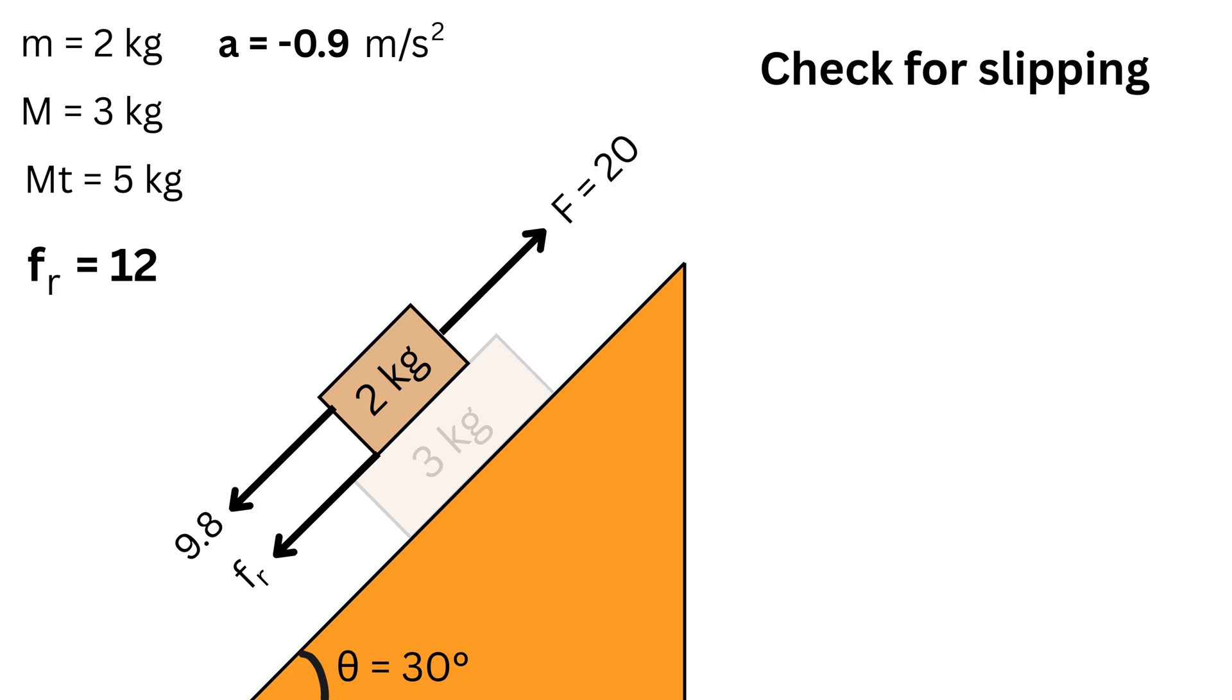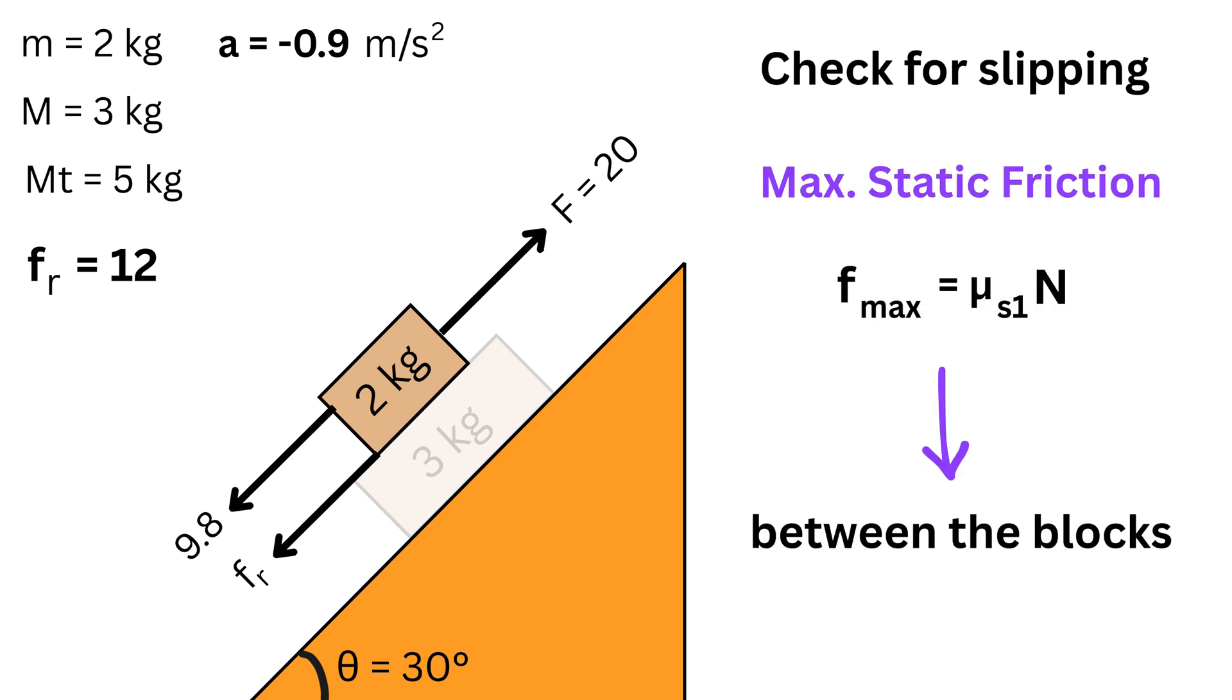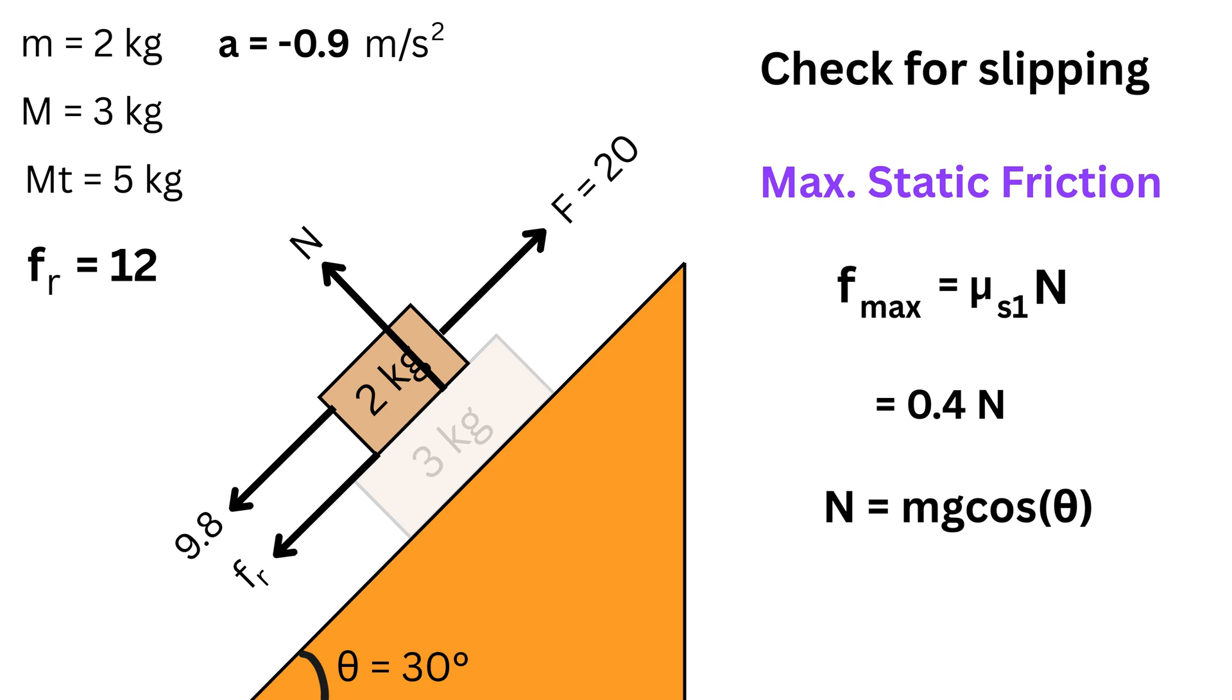Next, we will calculate the absolute maximum static friction f_max that can exist between the two blocks. This maximum force is the static friction coefficient mu_s1, or 0.4, multiplied by the normal force n between the blocks. Normal force, as mentioned, is given as mg cos(theta). Now here comes the main trick.